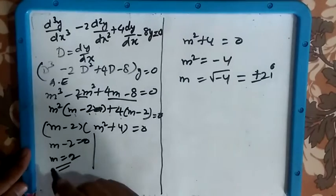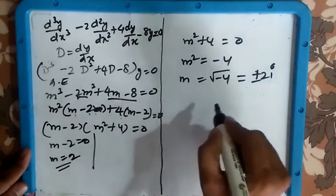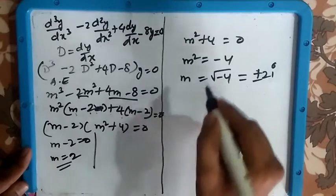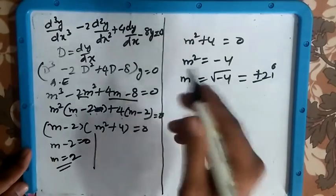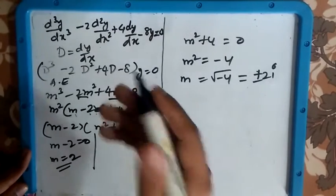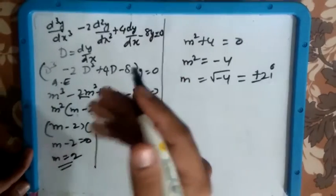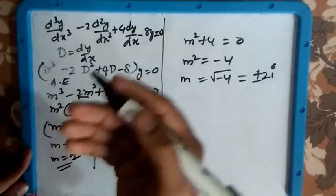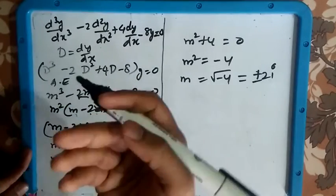So one root you are getting real value and another one is imaginary. To find out the general solution, we already know that real value can be written in terms of exponential e^(ax) and the imaginary value can be written in terms of cos and sine.